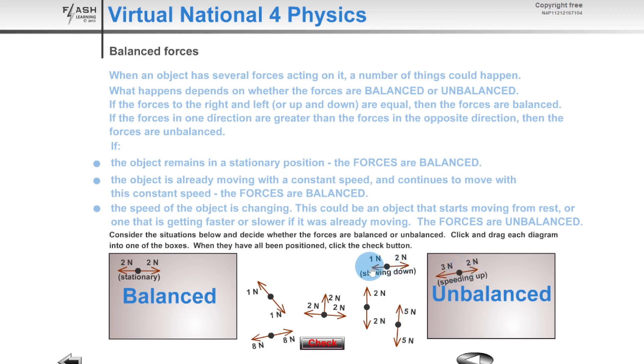We also have something that's slowing down: one newton to the left, two newtons to the right. So this time we have a resultant force of one newton to the right—we're taking the one away from the two to get the one newton to the right. So that's going in unbalanced.